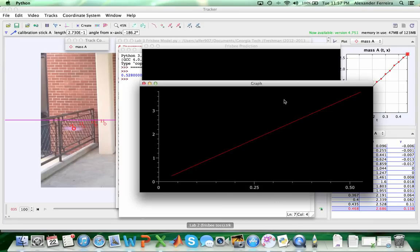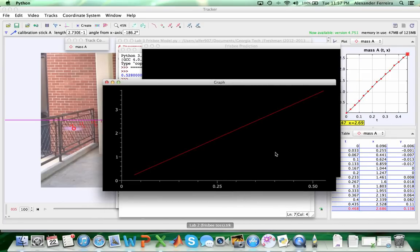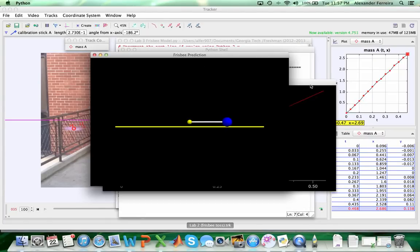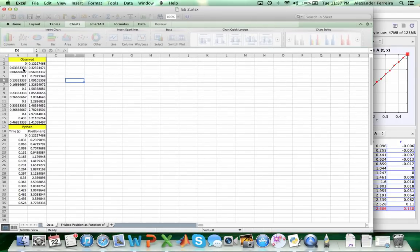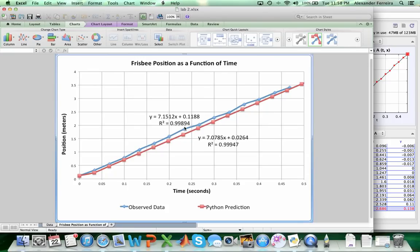So then what I did was I used the information from this graph, from this Python script, to create a CSV file, which is basically the position values as a function of time, the same exact thing that Tracker allowed me to do right over here. So I took all of that information, and I put it into this Excel file. If you see here, I've got all of this information, and I put that into a graph.